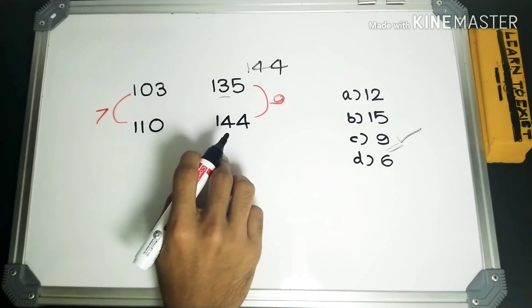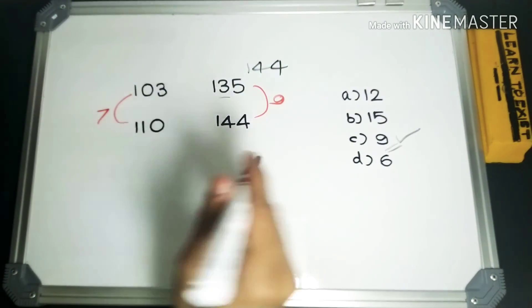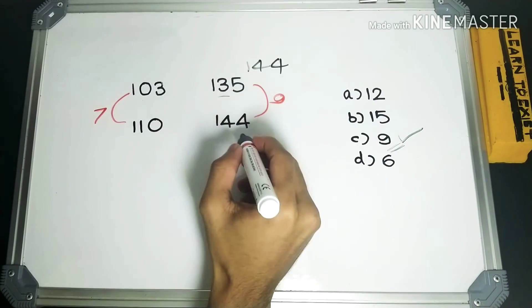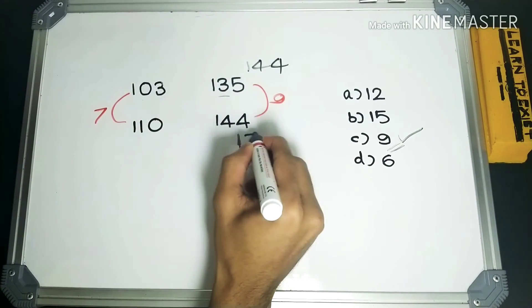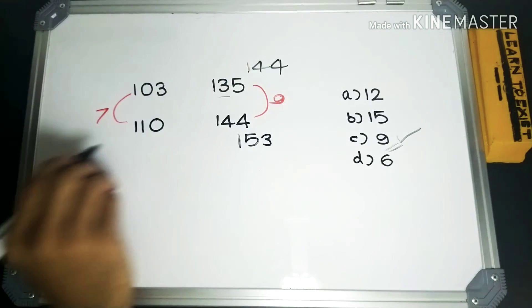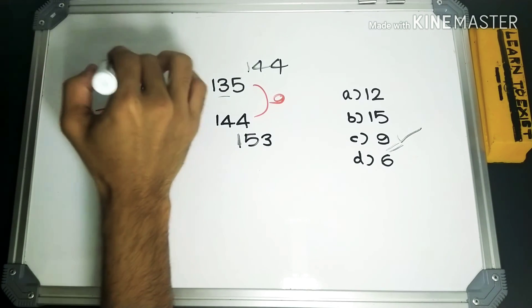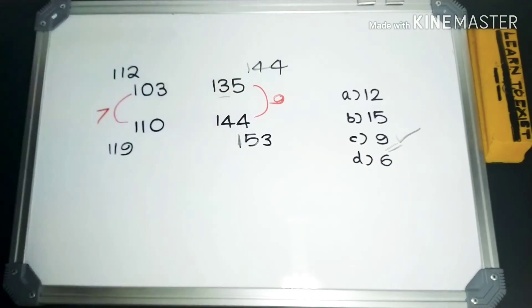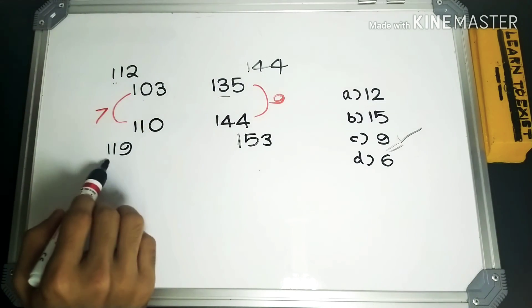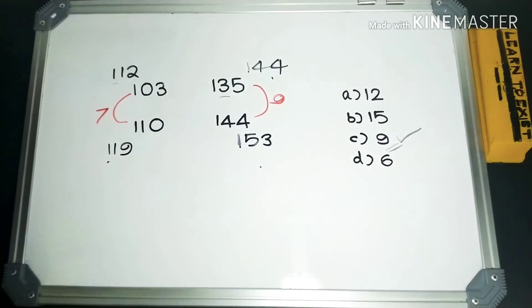We can check it with the other numbers also the way we did. 144 plus 9 will be 153. This would be 119, and this would be 112. Now these two are multiples of 7, and these two are multiples of 9.